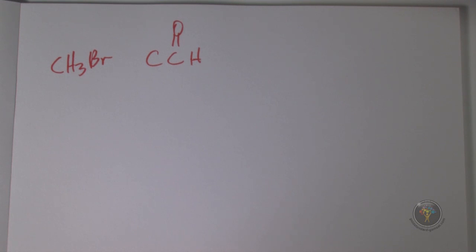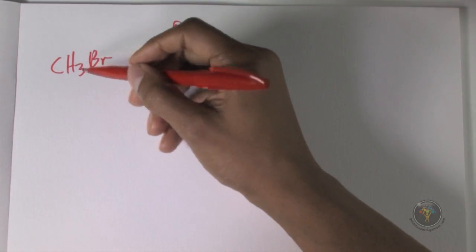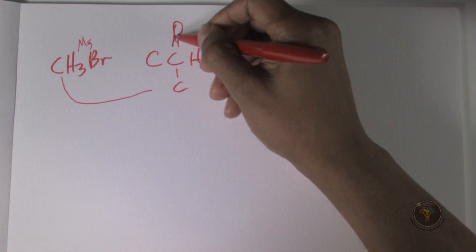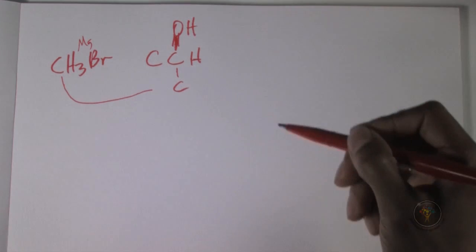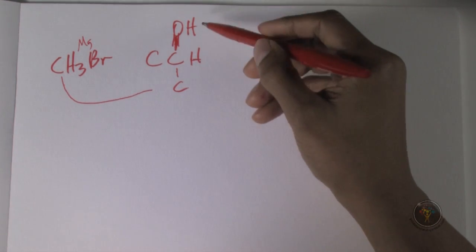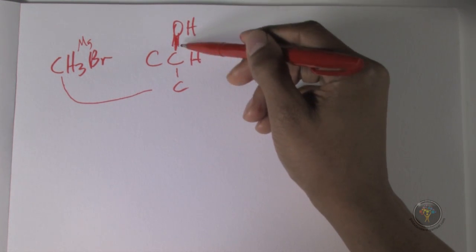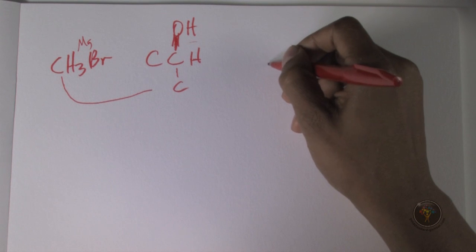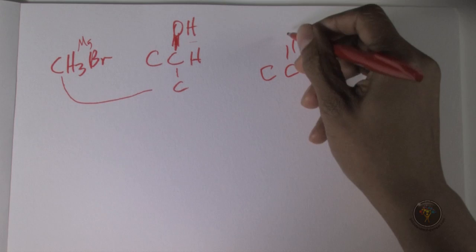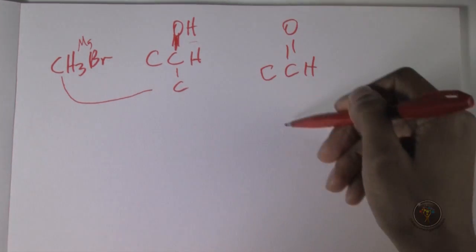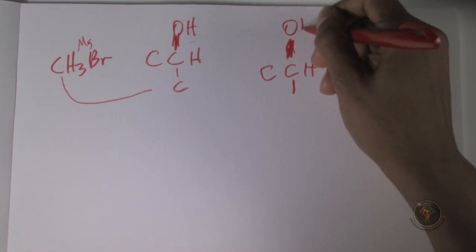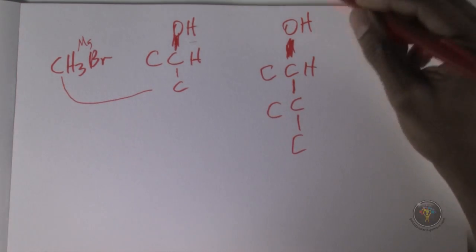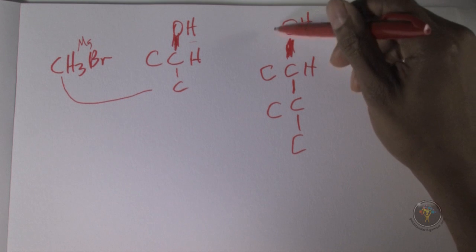Starting the cycles: methyl bromide becomes a Grignard, delta-negative carbon attacks the acetaldehyde carbonyl, electrons go up to form an alcohol. That's the end of step 3. The new step 4: acid reacts with the OH — H-plus plus OH makes water — replacing the OH with a halide. This new alkyl halide then becomes the Grignard for the next cycle. Acetaldehyde is used again.